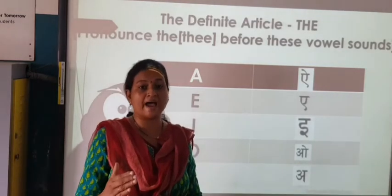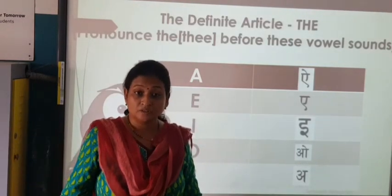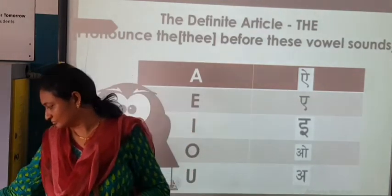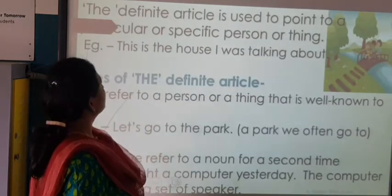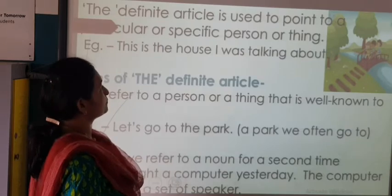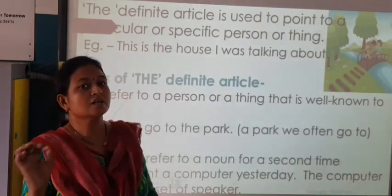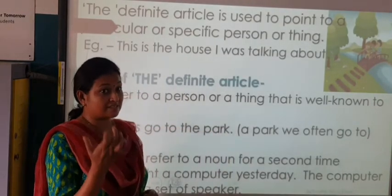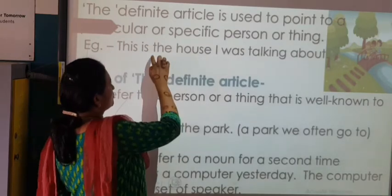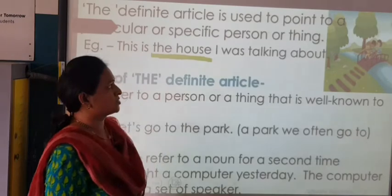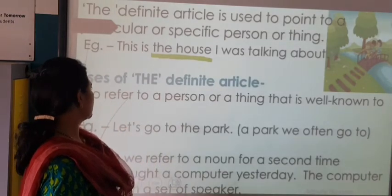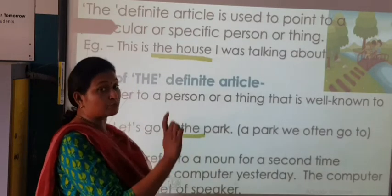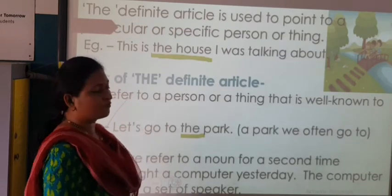'The honest man is very intelligent' — or 'the honest man is very kind.' The definite article is used to point to a particular or specific person or thing. Whenever you are sure about a certain thing, we will be using this definite article — as the name itself says, definite. 'This is the house' — that means I am talking about that particular house I was referring to. To refer to a person or thing that is well known to us: 'Let's go to the park' — I know which park I am talking about.